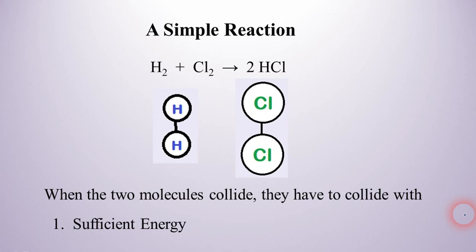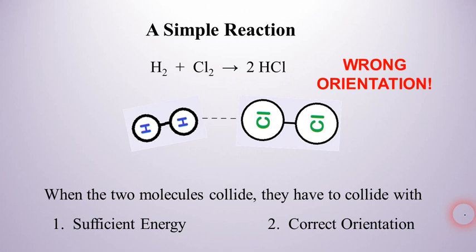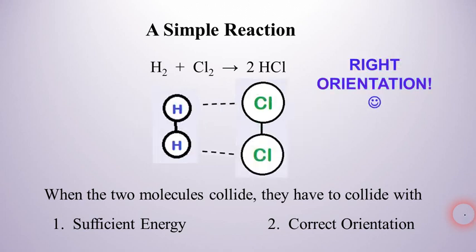Now second of all, they also have to collide with the correct orientation. That means in the right direction. So what do I mean by that? Well, let's say that we have these two molecules as an example, and they collide like this. Well, that's the wrong direction. That's the wrong orientation. In order for them to react, they're going to have to collide or hit each other in the right direction, the right orientation.